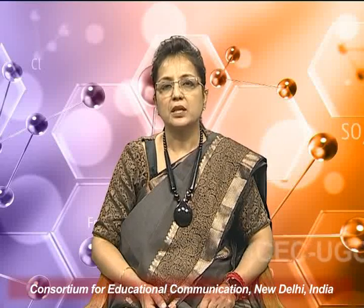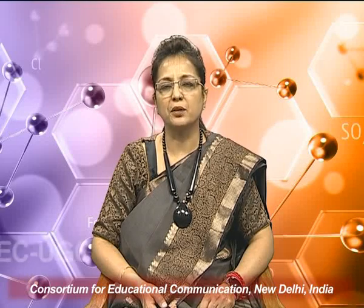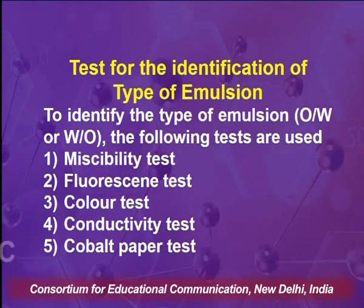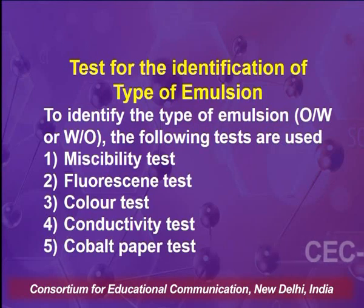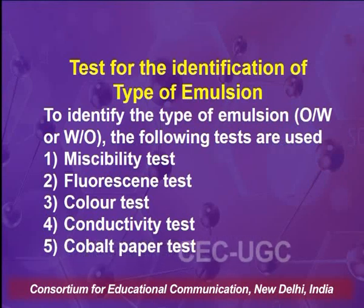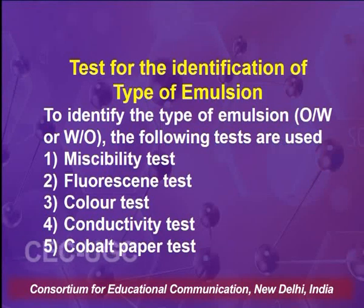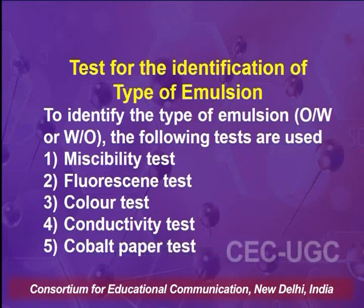In continuation with the topic of tests for identification of type of emulsions, it is very important to have certain parameters to identify the type. Emulsions can be oil-in-water type or water-in-oil type depending upon the proportion of continuous to discontinuous phase. The different tests that aid in identifying the type are: miscibility test, fluorescence test, color test (also called dye test), conductivity test, and cobalt paper test.